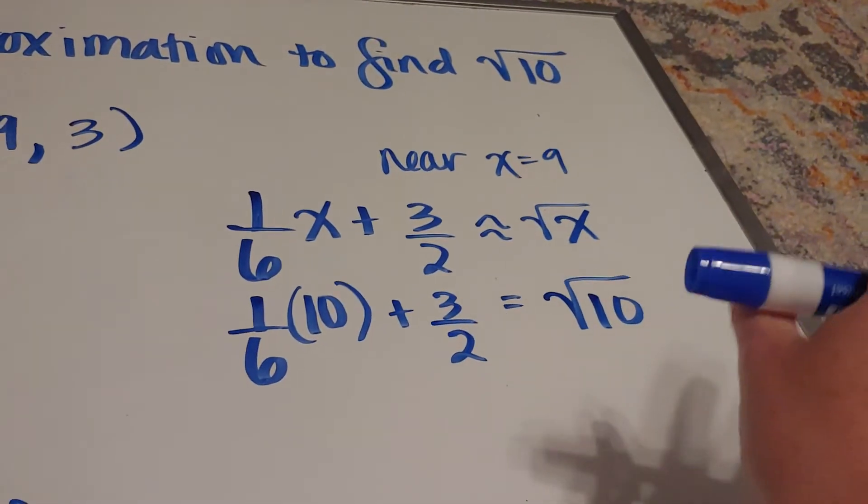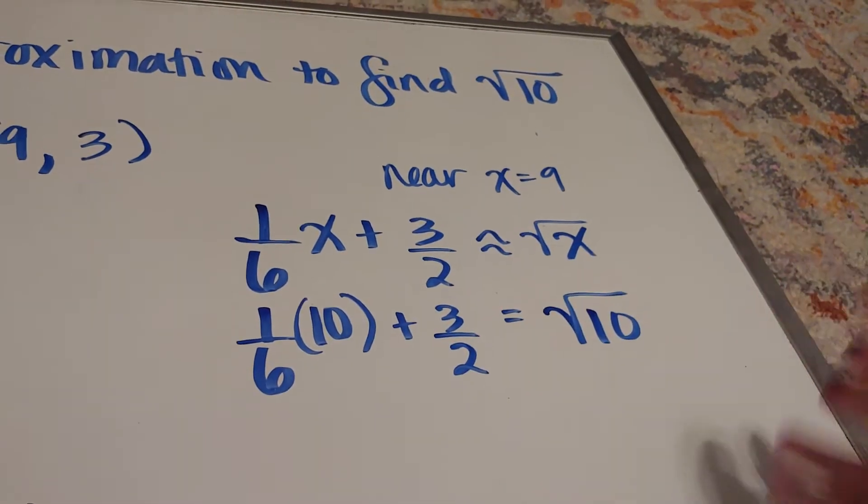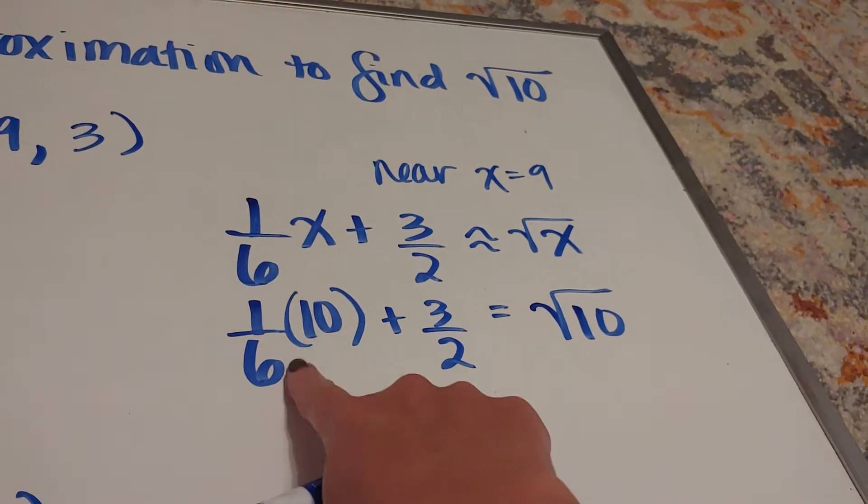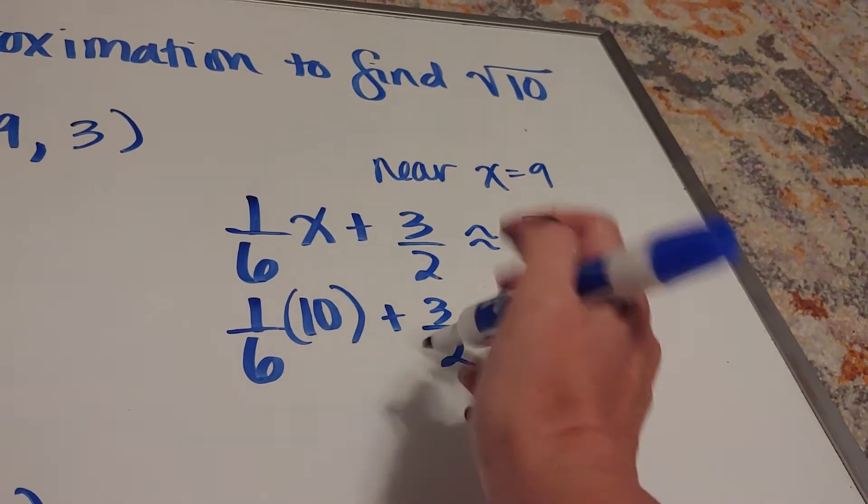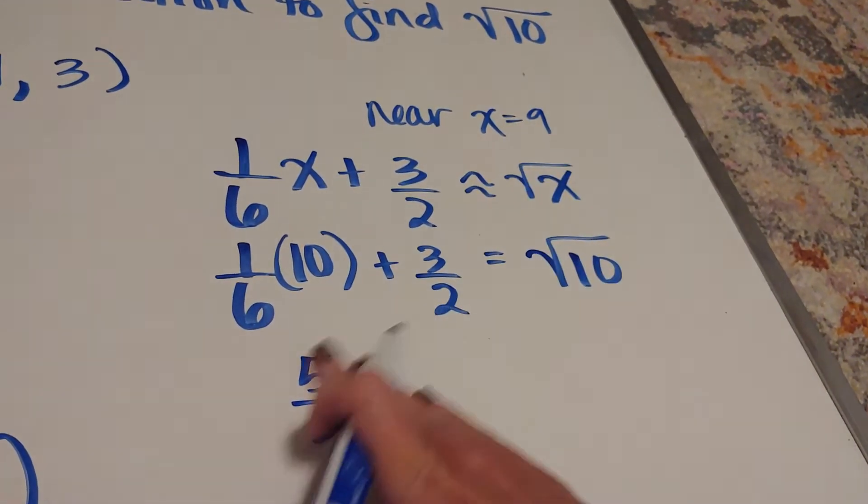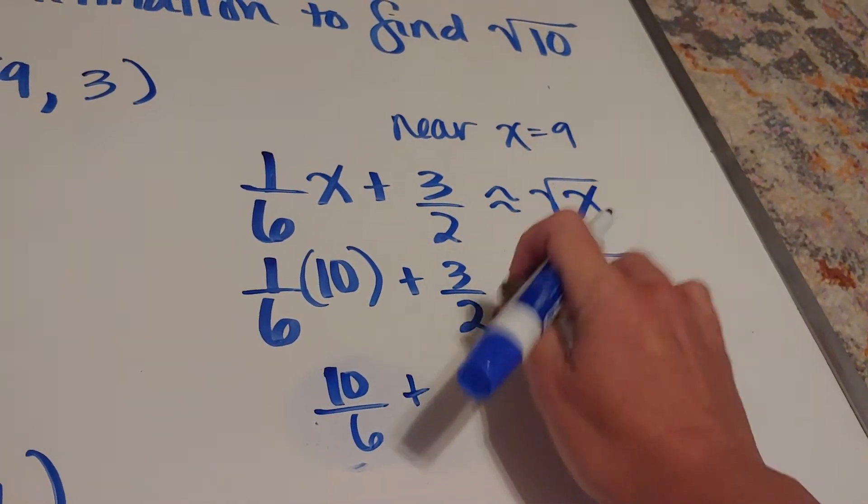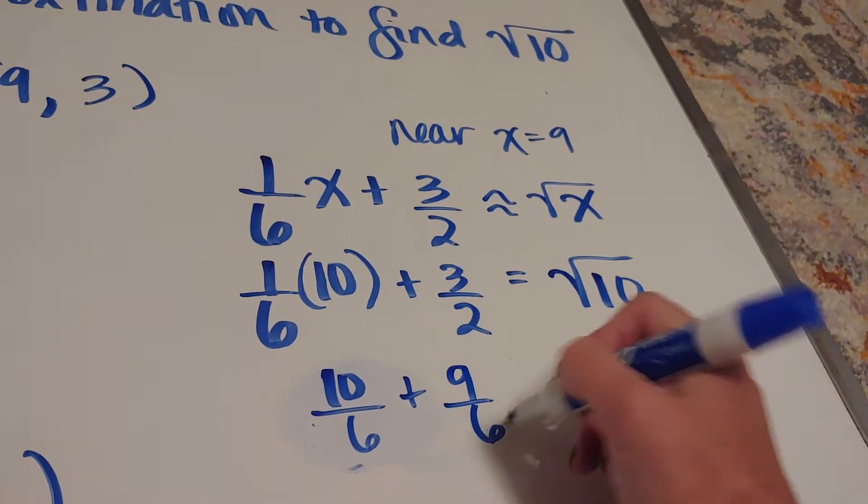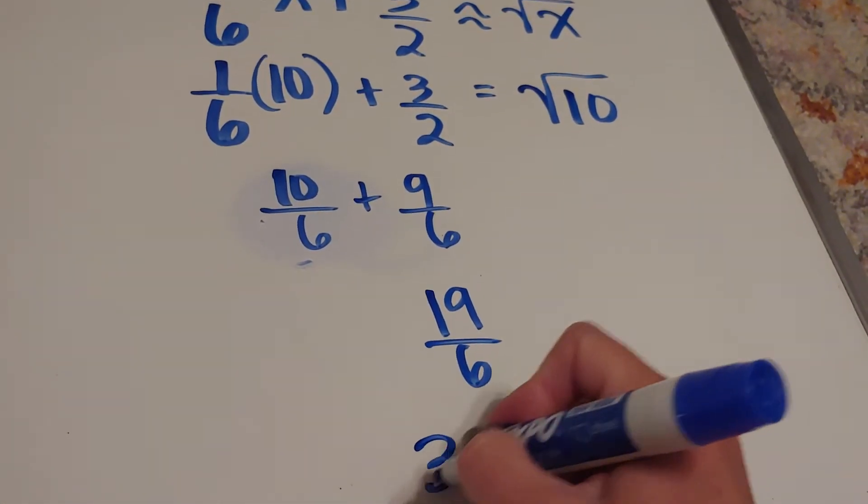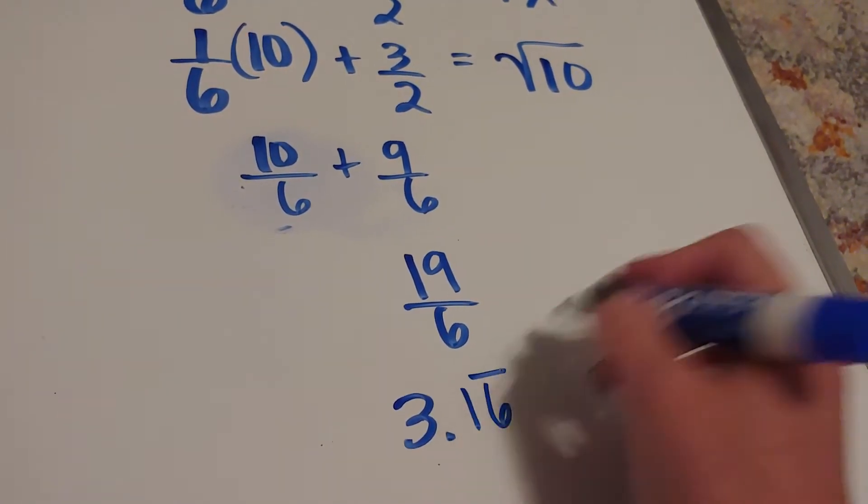Obviously we can put this on our calculator, but back in the 1700s, 1800s, 10/6 is the same thing as 5/3. Actually, let's leave it as 10/6 and call this 9/6. So this would be 19/6, which is the same thing as three and one-sixth, which is 3.16 repeating.